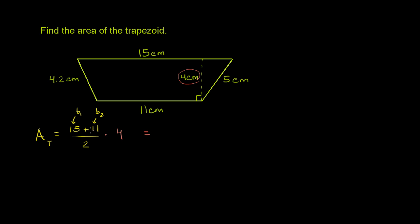So 15 plus 11 is 36. Or sorry, it's 26. 15 plus 11 is 26 divided by 2 is 13. And then you have 13 times 4, which is equal to 40 plus 12, which is 52 square centimeters. And we're done. We found the area of the trapezoid.